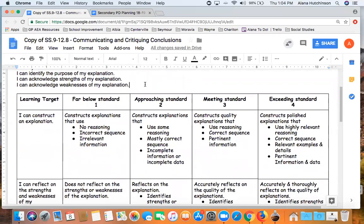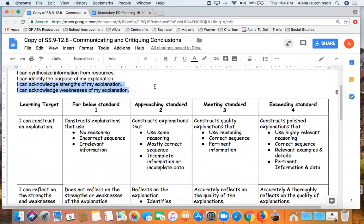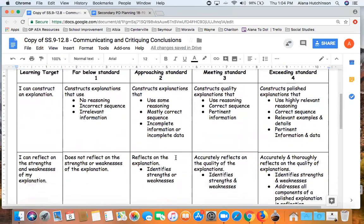The second rubric I did really addresses the bottom two learning targets here. And it's identifying the strengths and weaknesses of the explanation. So I thought this was kind of the next step in the process. And it was a different skill than actually constructing the explanation. So I'll give you a chance to look at the rubric that I created here. And my learning target became I can reflect on the strengths and weaknesses of my explanation. And you could even have maybe on others' explanations, so they're giving feedback to each other and you could use a similar rubric.